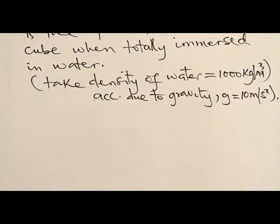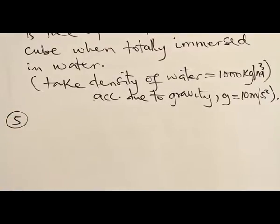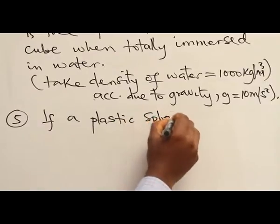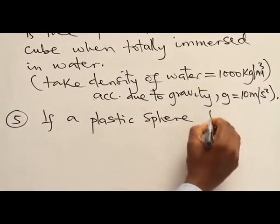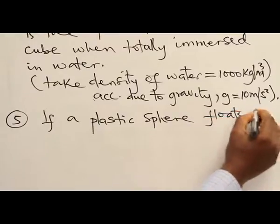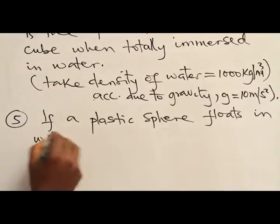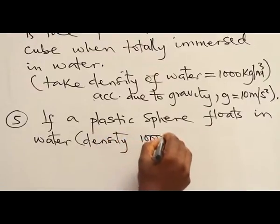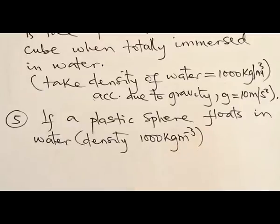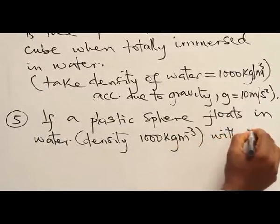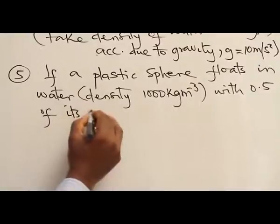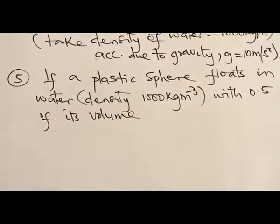Question number 5. If a plastic sphere floats in water of density 1000 kg per meter cube, with 0.5 of its volume submerged.